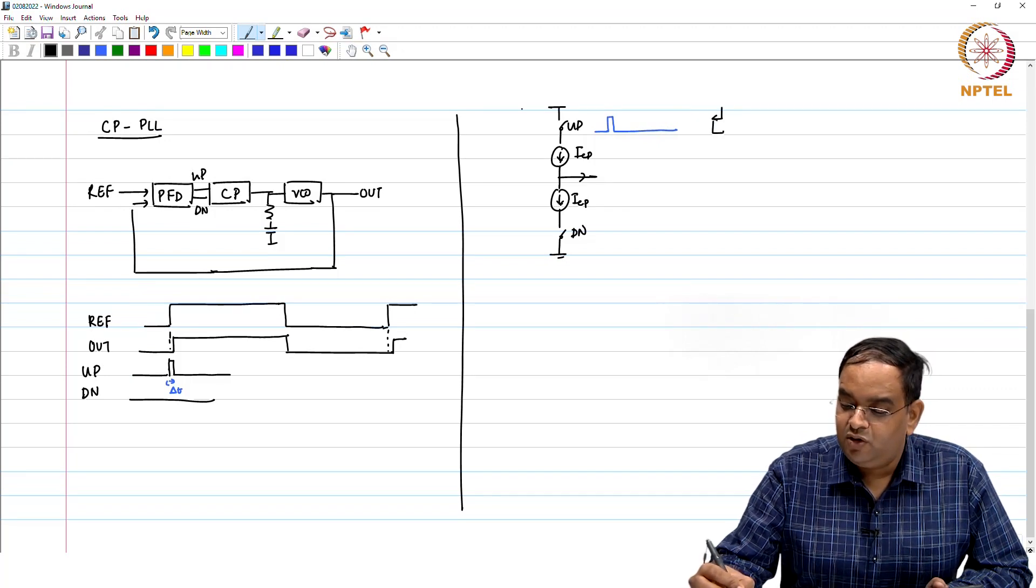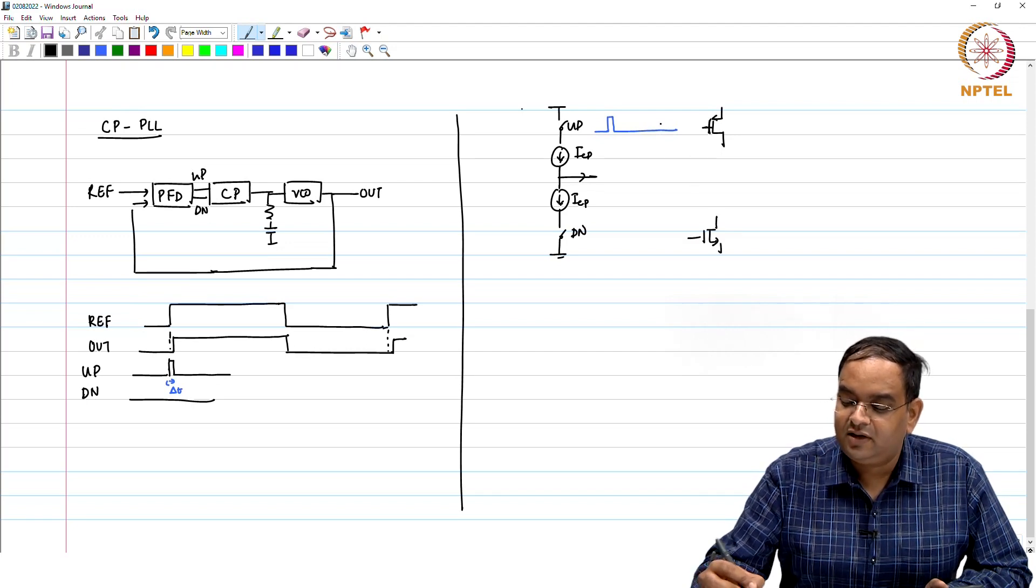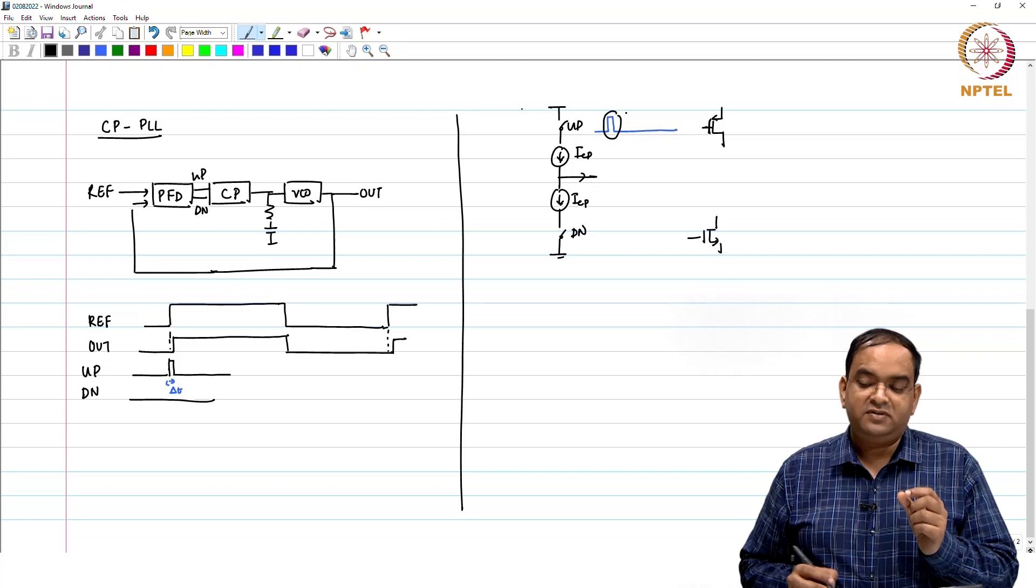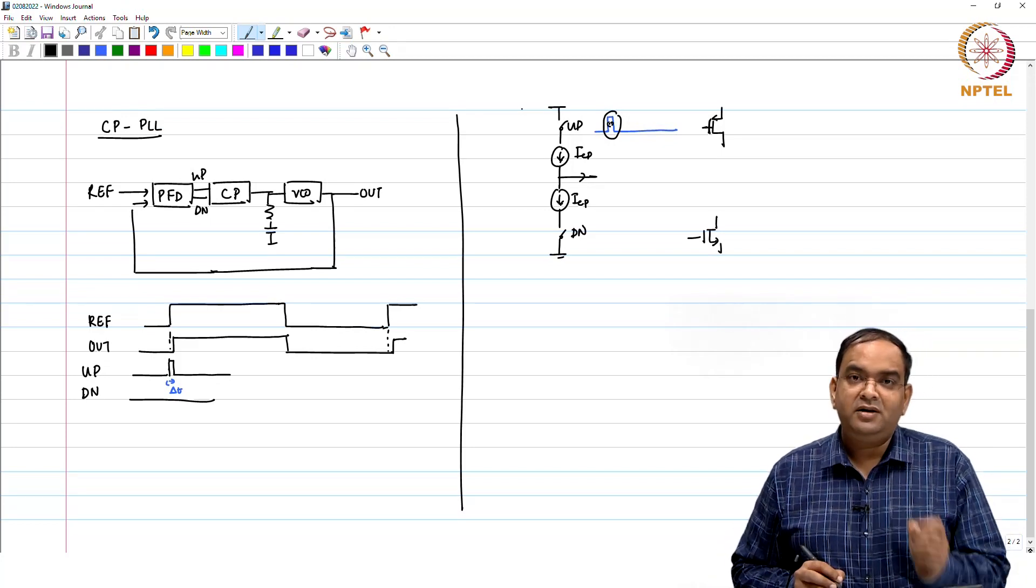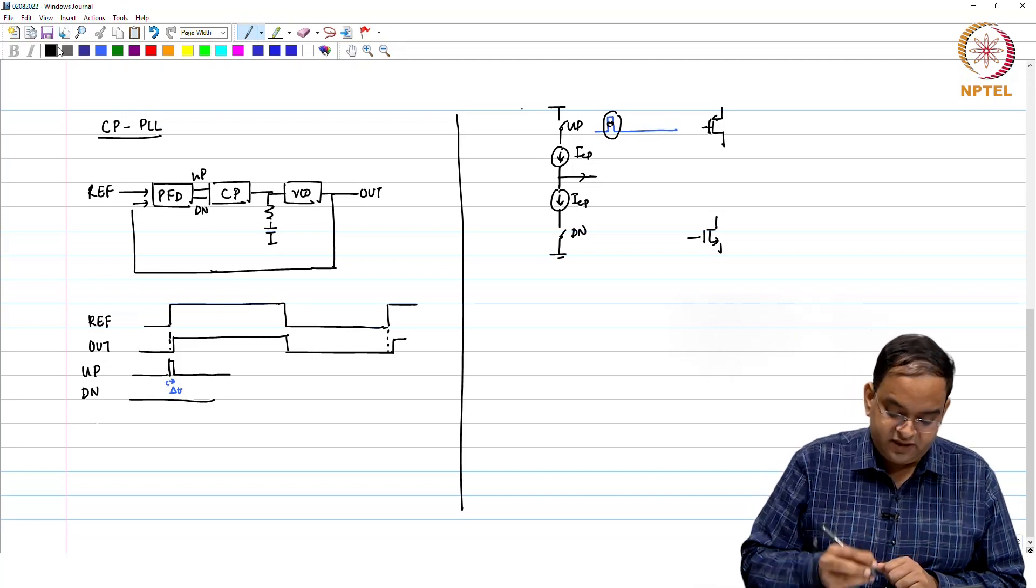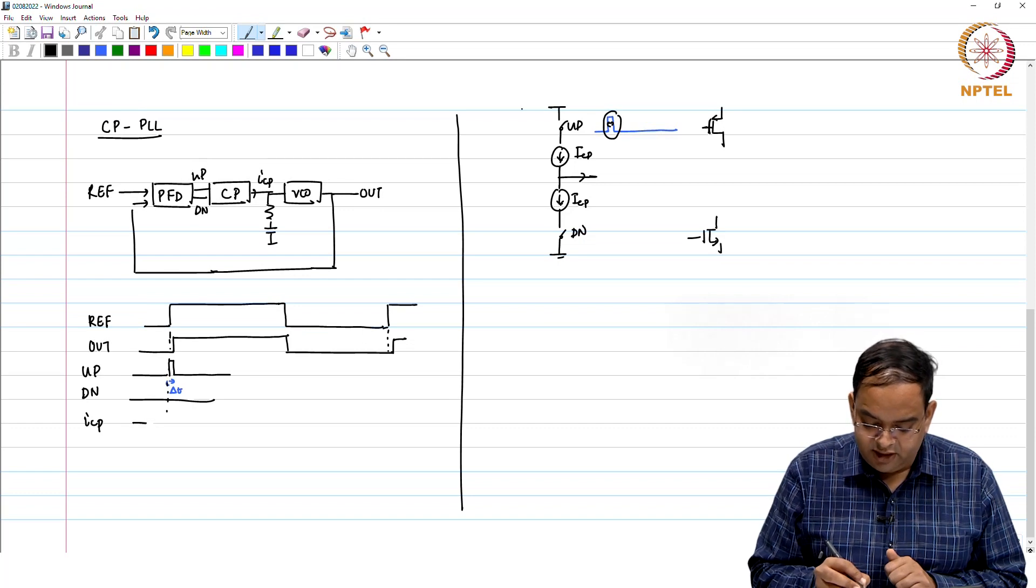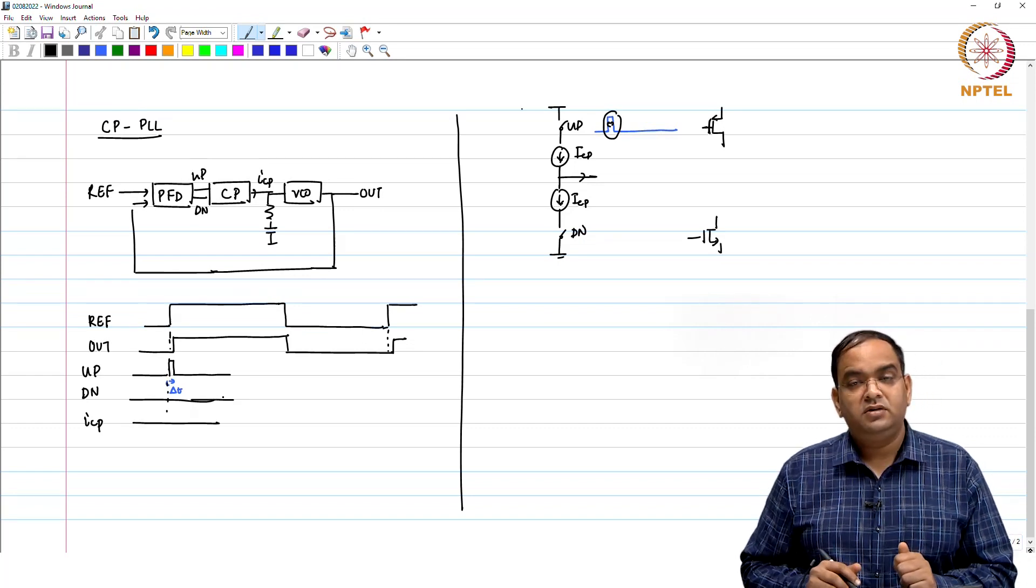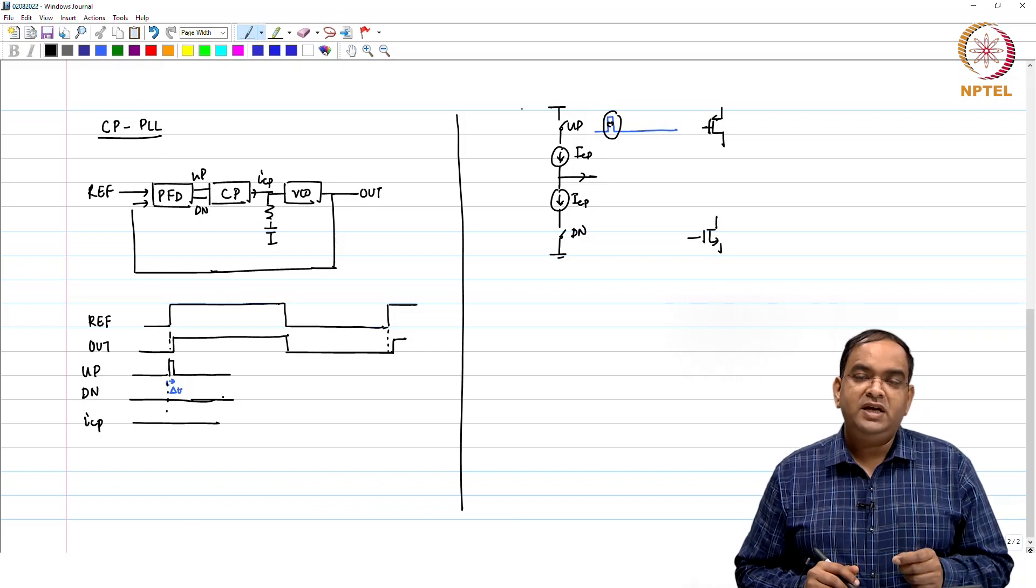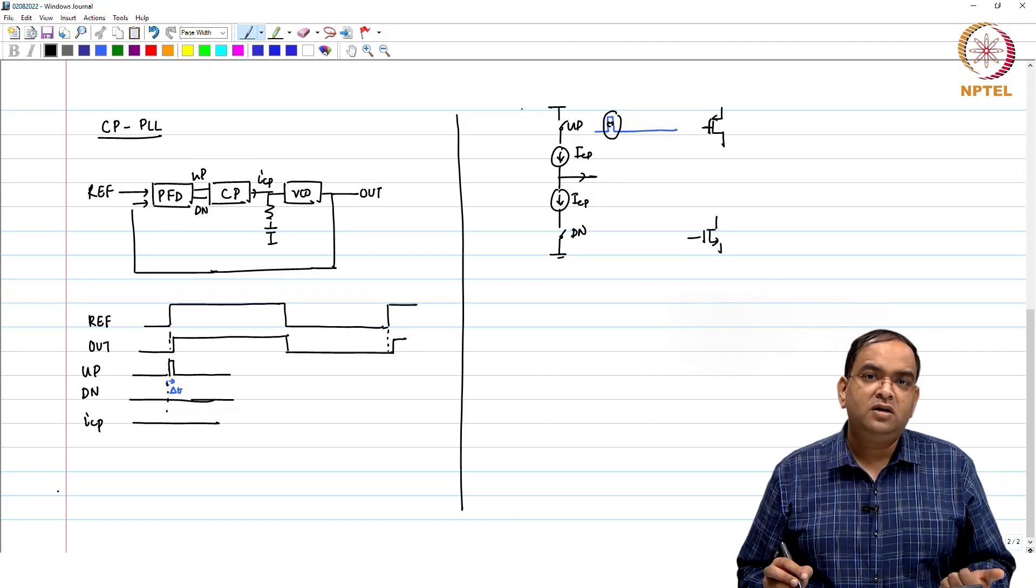These up and down signals may be realized using MOS switches. If you give this pulse to the MOS switch, if the pulse width is very narrow then it will not even turn on. If it does not turn on for small phase errors, then the current ICP which you are going to get out of the phase error detector, that current will remain zero, it will not change.